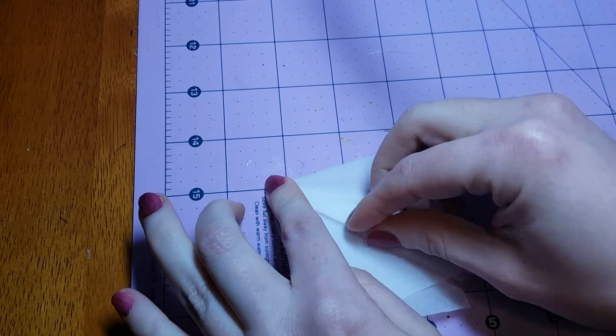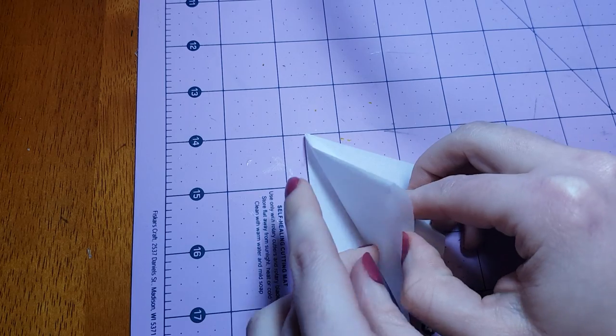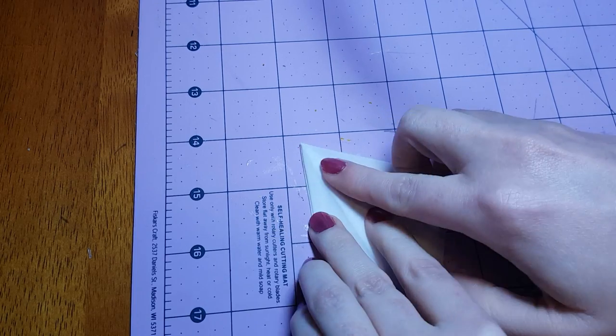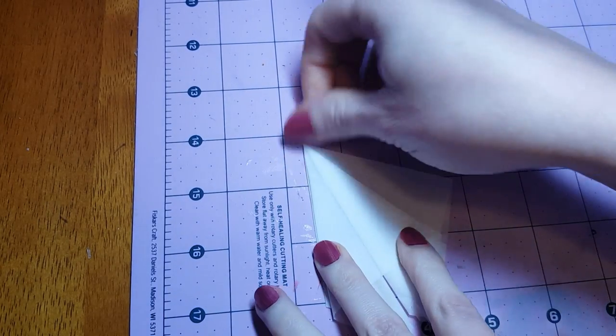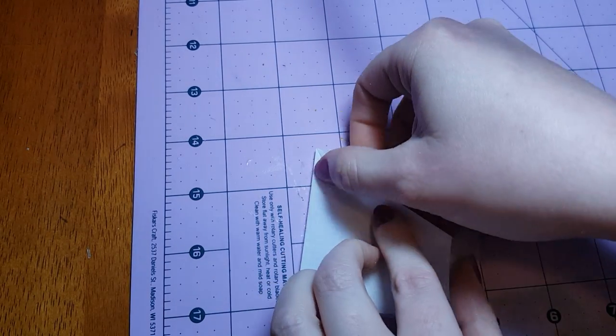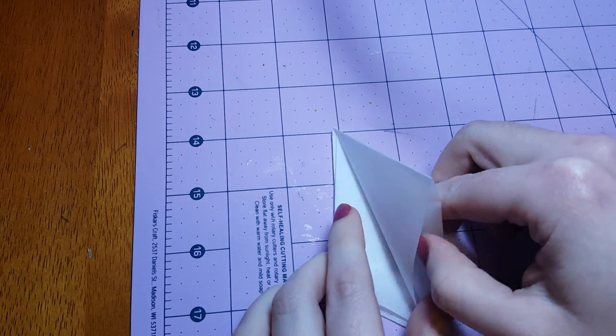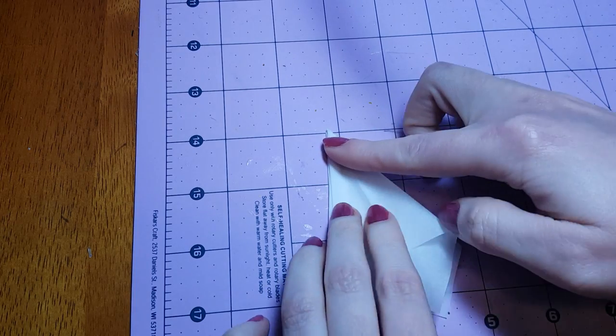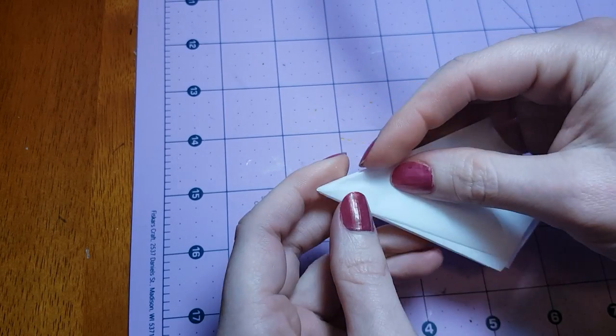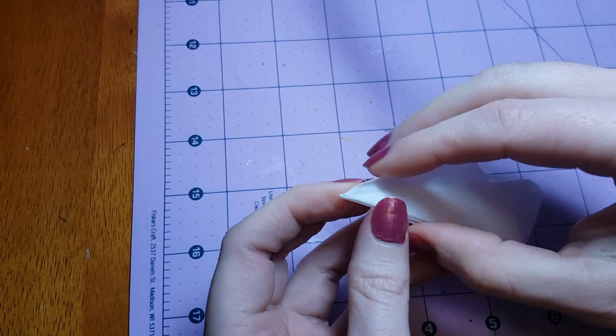I'm just going to fold that one in half to move that flap out of the way, and then I'm going to pick up this next large flap and do the same thing, squish it down to form a triangle. I'm going to flip it upside down. Fold that piece in half to get it out of the way, and then we have one large flap left. I'm going to squish that one down, and then I'm going to fold it in half and flip it over and fold the other one in half as well.